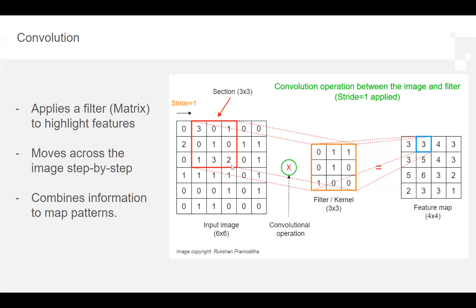The math behind convolution works similarly to matrix multiplication. We apply a matrix kernel and multiply it across the input image, producing what we call a feature map. For example, a 6x6 input image produces a 4x4 feature map output — simpler, but retaining the key information from the original input. This convolution step helps the model map patterns in the image, which it then uses to output a classification.